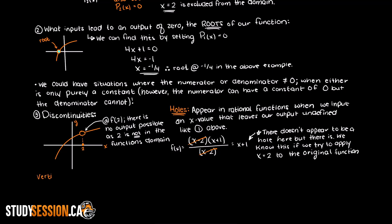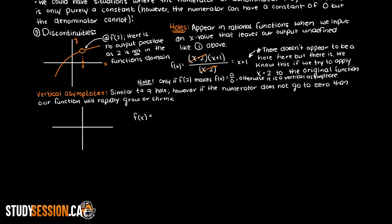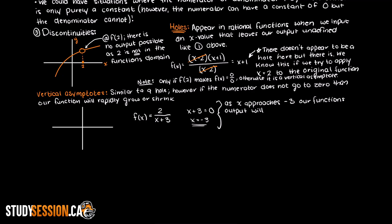Another way that a discontinuity can be achieved is through a vertical asymptote. Whenever our denominator is going to equal 0 we have a vertical asymptote. For example, in this equation here we have a vertical asymptote present at minus 3.